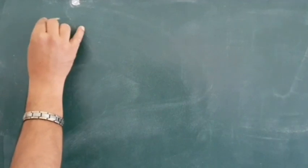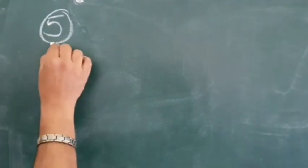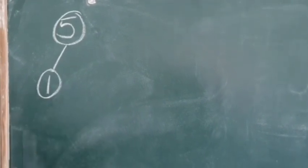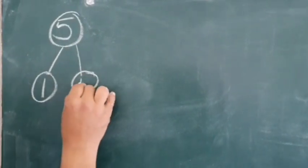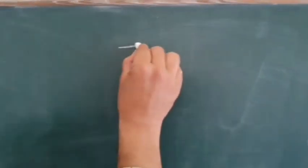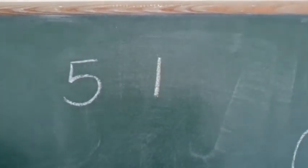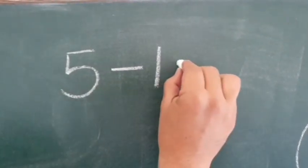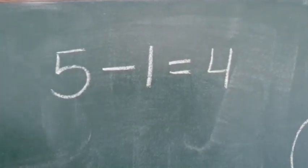There were 5 pigeons, 1 pigeon flew away, and there were 4 pigeons left behind. To solve this, we use the sign of minus: 5 minus 1 is equal to 4.